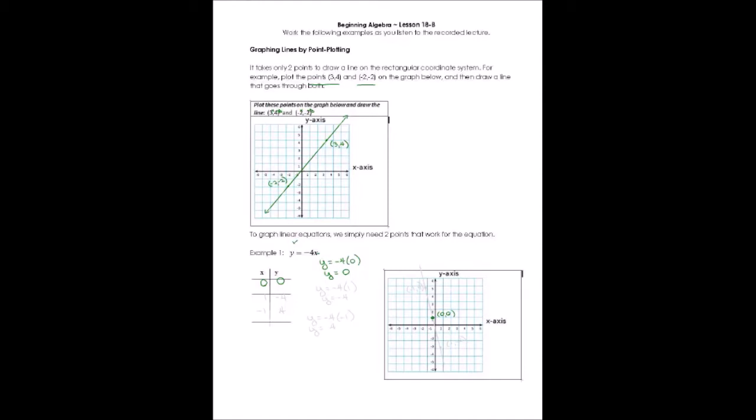So I need another point. What value would you choose for x? This time, I think I'll choose another number that's pretty easy. How about I choose the number 1 for x? If I choose 1 for x, y is going to equal negative 4 times 1, or y will equal negative 4.